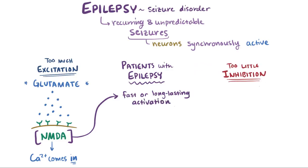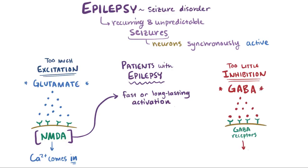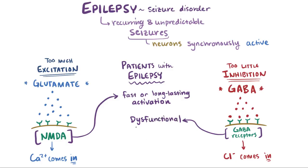On the flip side, the main inhibitory neurotransmitter in the brain is GABA, which binds to GABA receptors that tell the cell to inhibit the signal by opening channels that let in chloride ions — negative ions that tell the cell to inhibit signals. Some patients with epilepsy seem to have genetic mutations in which their GABA receptors are dysfunctional, so they aren't able to inhibit signals.